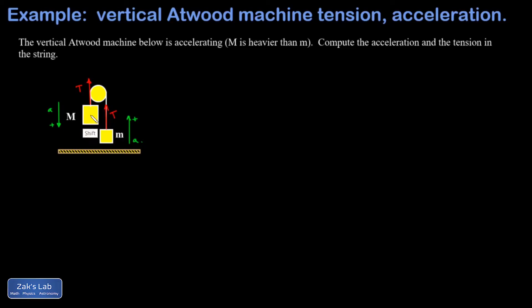Gravity pulls down on the big one with a large weight vector of Mg, and pulls down on the little one with a small weight vector of mg. Note something qualitative in the force diagrams: I made T bigger than little mg so the net force points upward and m accelerates upward. On the other side, I made big Mg bigger than T so the net force points downward and that mass accelerates downward.